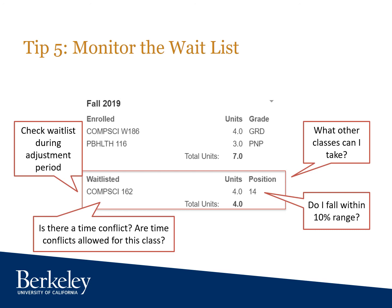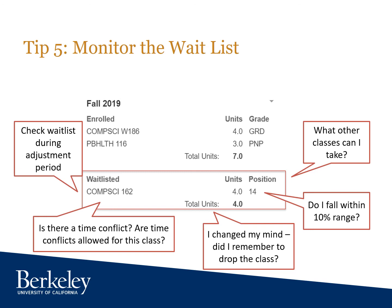Last but not least: if you change your mind while you're on a waitlist and you decide you don't want the class, remember to drop the class. This happens every semester. Students decide they don't want to take a class, forget to drop themselves from the waitlist, and then the night before the add/drop deadline, the instructor expands enrollment and takes everyone waitlisted into the class. Students get sucked into the class, the add/drop deadline passes, and now they're unable to drop it easily. So my last reminder: if you're not going to take the class, drop off the waitlist.